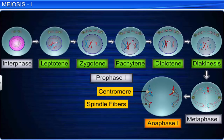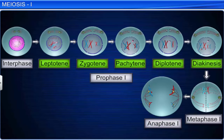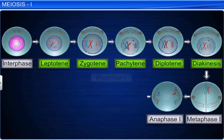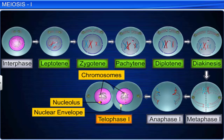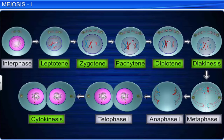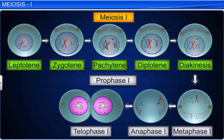This marks the end of anaphase 1, which is then followed by telophase 1. In this phase, the chromosomes are at the poles while the spindle fibers disintegrate, and the nuclear envelope and the nucleolus reappear. Cell division, or cytokinesis, follows telophase 1 and results in two cells referred to as a dyad. Therefore, meiosis 1, which progresses from prophase 1 to telophase 1, results in the formation of two cells with half the number of chromosomes compared to the original cell.